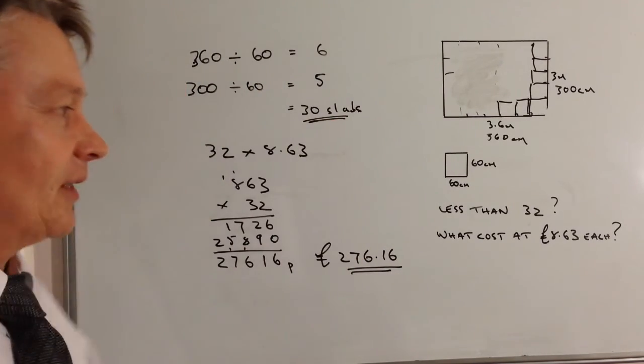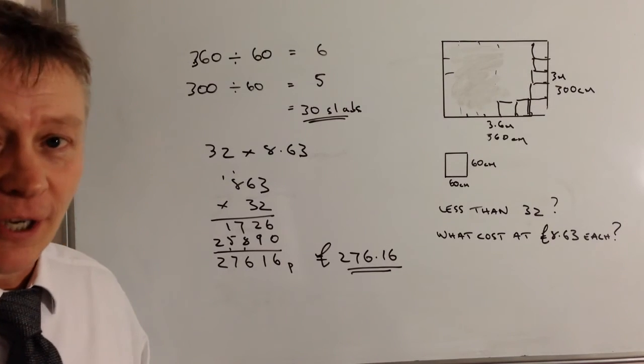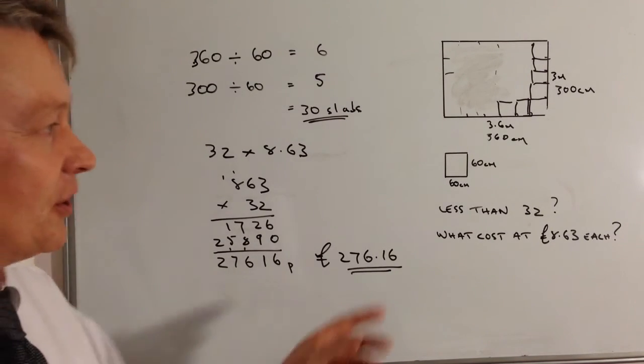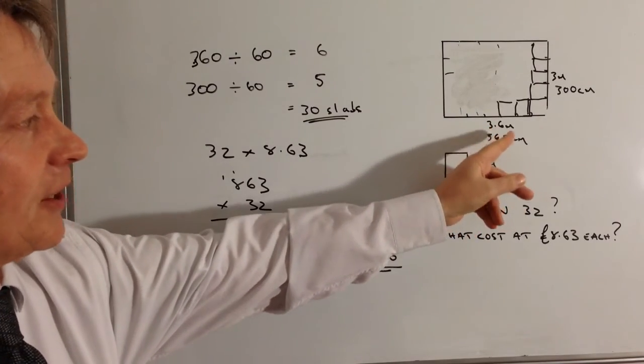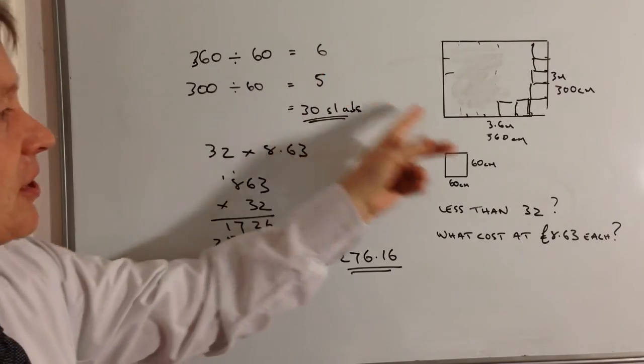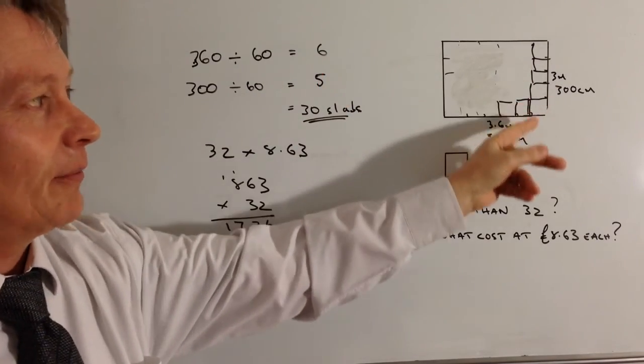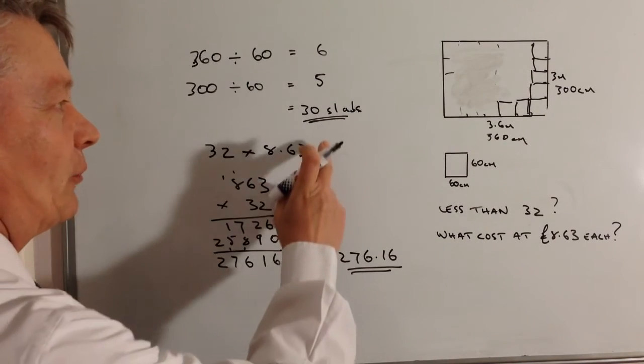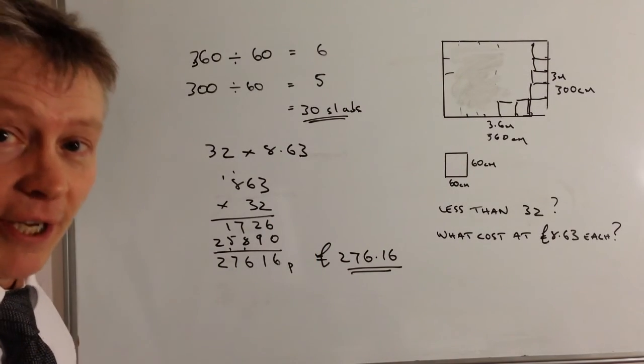And those are my two answers. Okay I hope that's been okay for you. The skills that you need to be aware of with this is you need to figure out the conversion of units here. You also need to look at how many slabs you can put along there and how many slabs you can put on the upwards there, and that will give you then a total of 30 paving slabs.